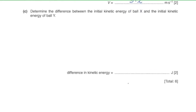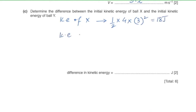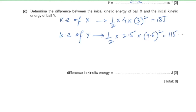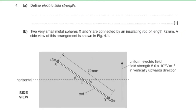Part c: determine the difference between the initial kinetic energy of ball X and ball Y. KE of X = ½ × 4 × 3² = 18 joules. KE of Y = ½ × 2.5 × 9.6² = 115.2 joules. The difference is 97.2 joules.